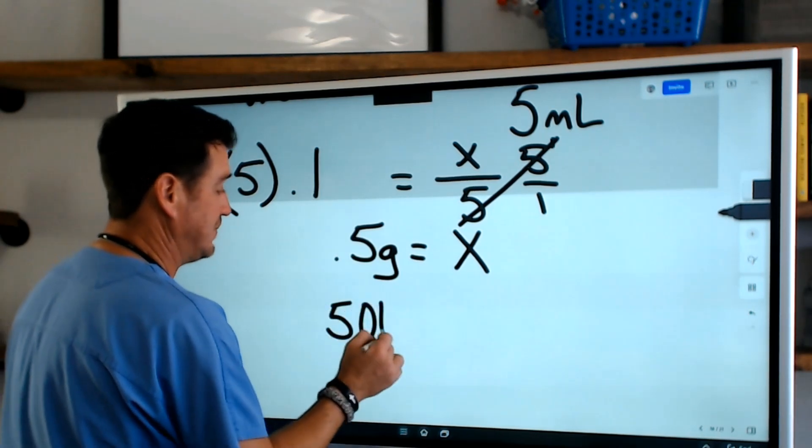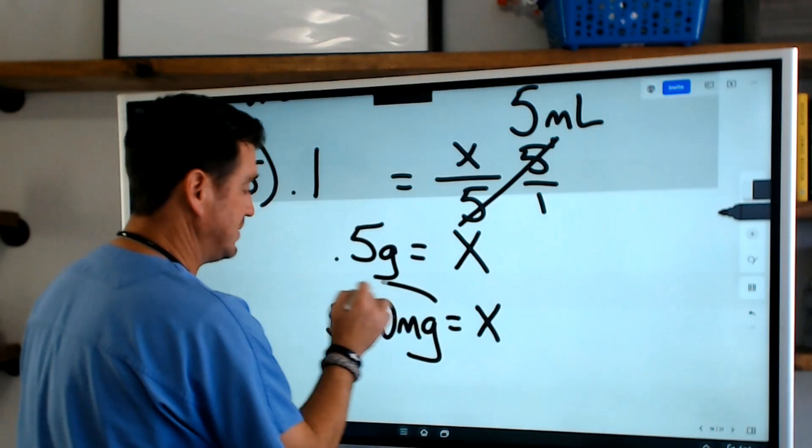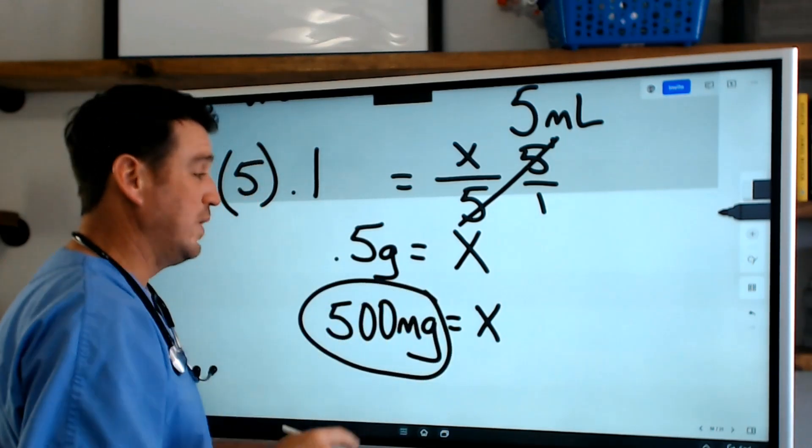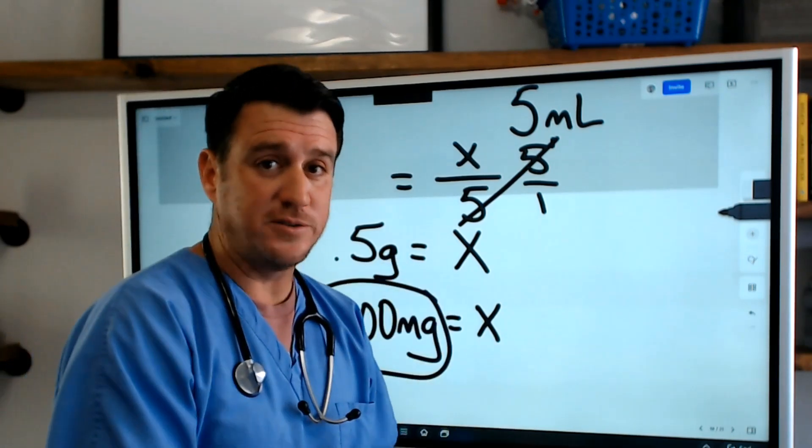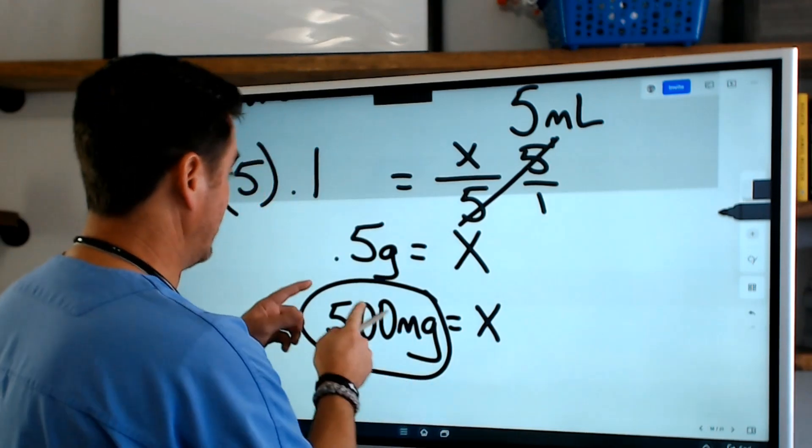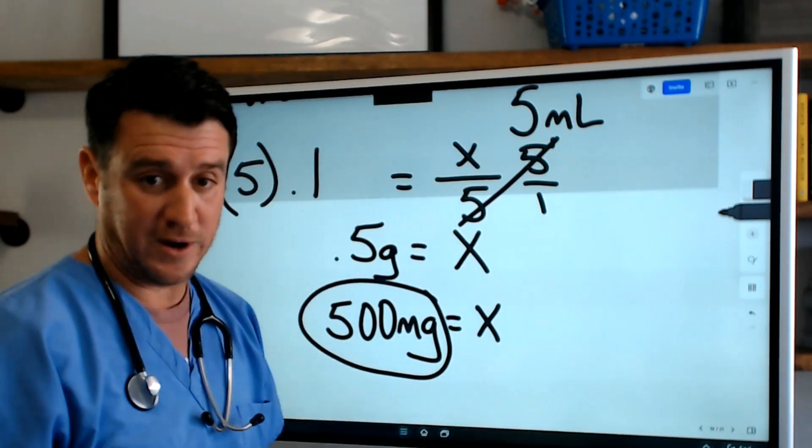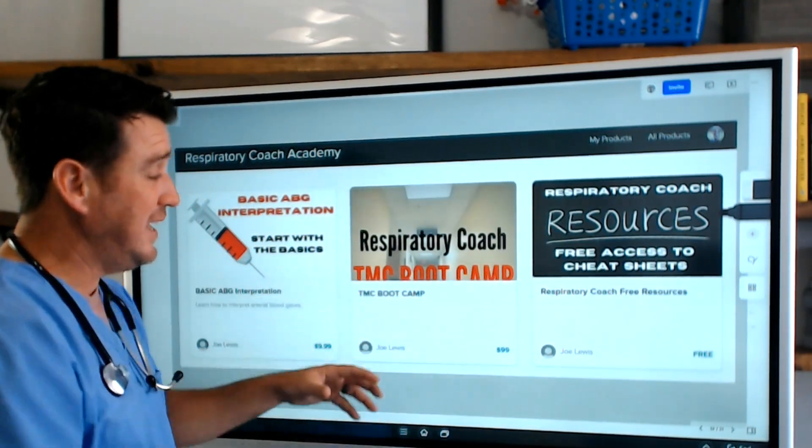0.5 times a thousand is 500 milligrams, and that's how much we delivered in this scenario. 5 ml of 10 percent mucomist equals the delivery of 500 milligrams. That's the percent strength formula, that's what it looks like, that's what it is.